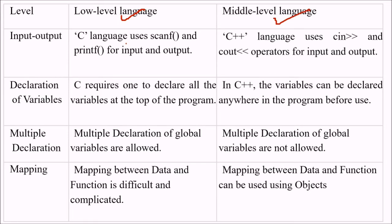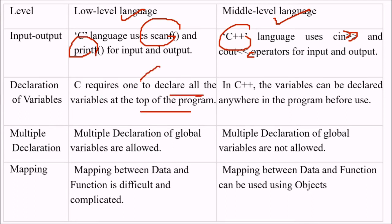For input and output, C uses scanf and printf, while C++ uses cin and cout. Regarding variable declaration, C requires you to declare all variables at the top of the program, while in C++ a variable can be declared anywhere in the program before it is used. Multiple declarations of global variables are allowed in C, while multiple declarations of global variables are not allowed in C++.